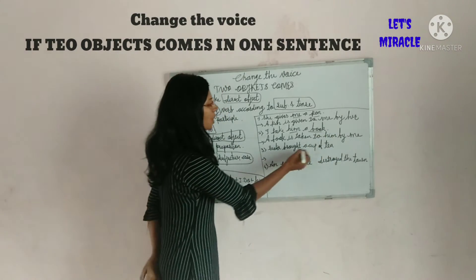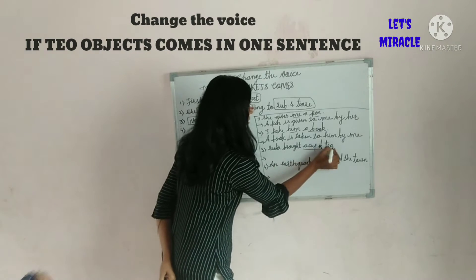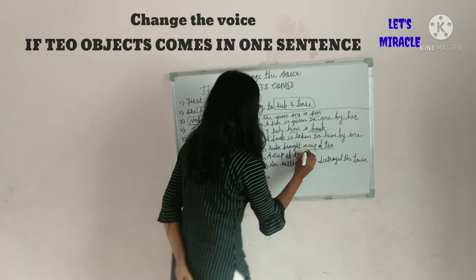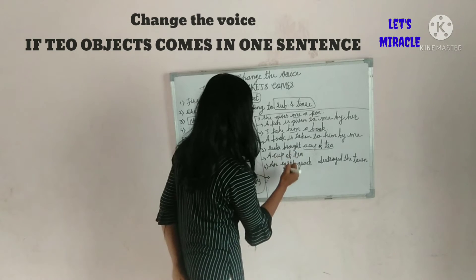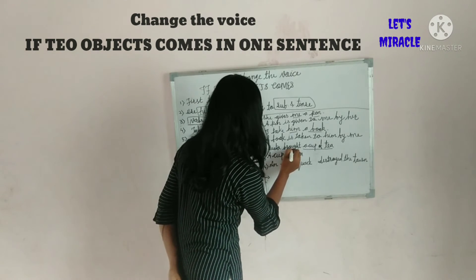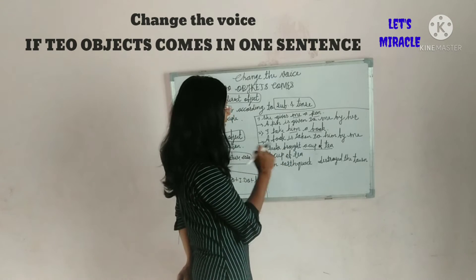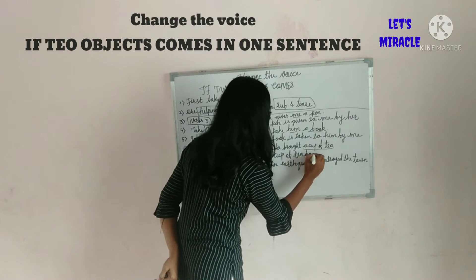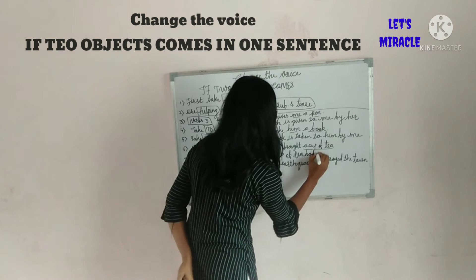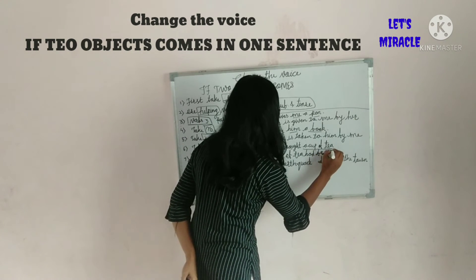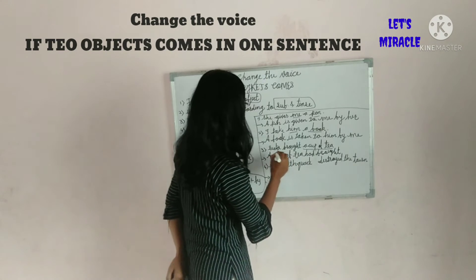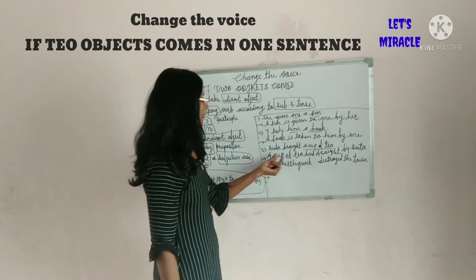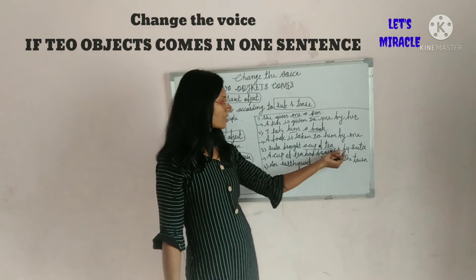Next: 'Sita brought a cup of tea.' Here the object is 'a cup of tea'. It is simple past tense, so the helping verb is 'had'. The sentence changes to: 'A cup of tea had brought by Sita'.